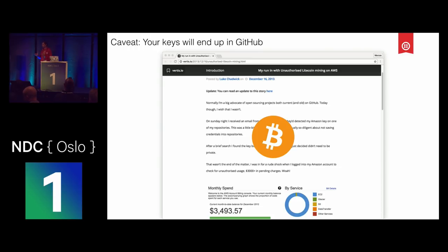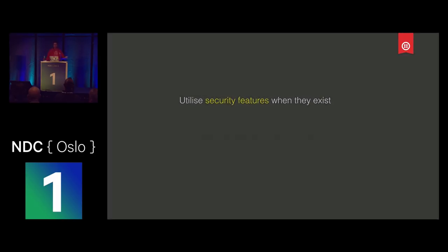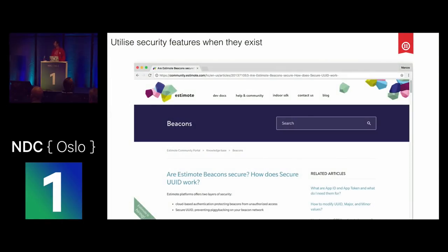The other thing they could have done is utilizing security features where they exist. Remember the beacons I talked about — the beacons had their keys, UIDs, and everything in plain text. As it turns out, there are ways you can encrypt your beacons so that when they pass information around, they're passing encrypted information. This goes to many different other hardware you can be using — you need to make sure you're protecting yourself when there's a way to be protected.